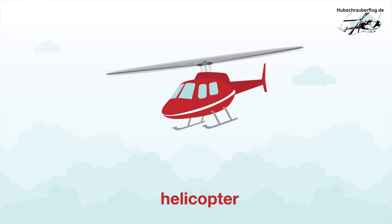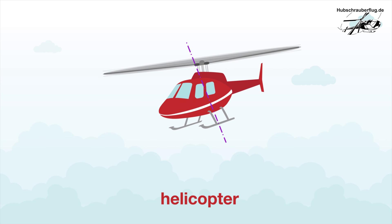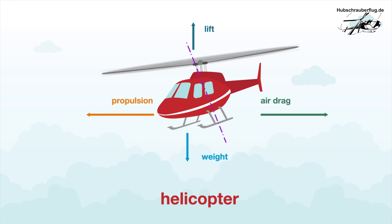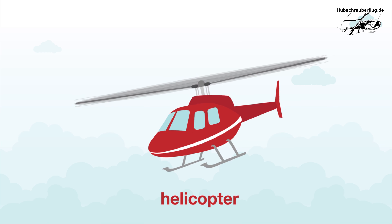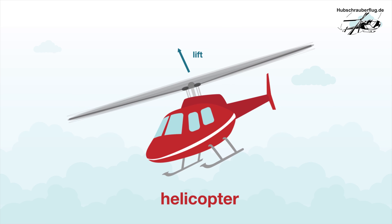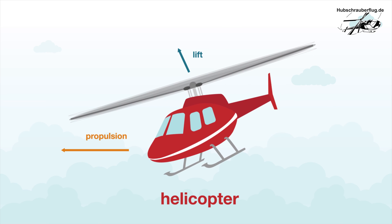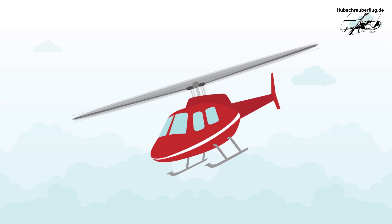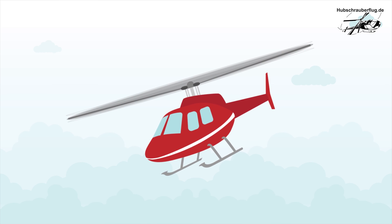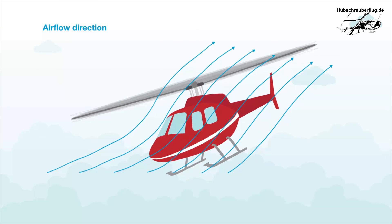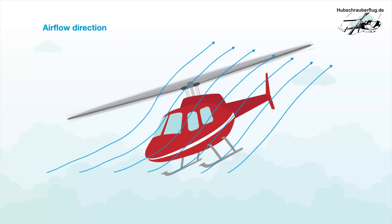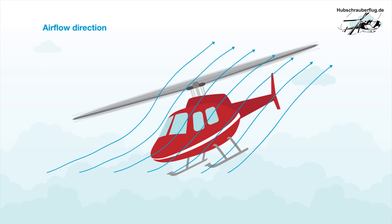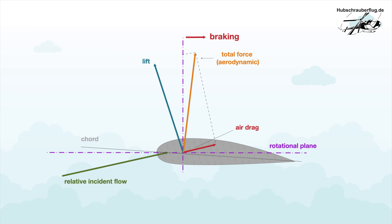To fly forwards, the rotor plane is tilted forward, so that the airflow is slightly accelerated backwards. The rotor plane is thereby inclined in the direction in which the helicopter is supposed to fly. What is known as gliding flight for a fixed-wing aircraft is called auto-rotation for a helicopter. If the drive fails during flight, the pilot reduces the collective pitch angle. The result is a wind turbine effect and the rotor speed is maintained, allowing the pilot to make a controlled descent and land the helicopter.